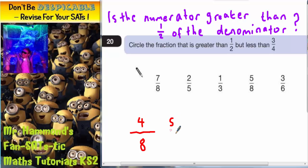So five eighths, six eighths, seven eighths, they are all bigger than a half.